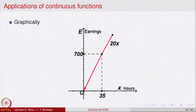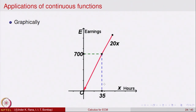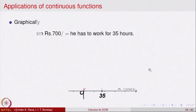To earn 700 rupees by working at 20 rupees per hour, he has to work for 35 hours. Why should he work at all? He has to put in 35 hours of work to earn what he already gets for free. So most likely he will not work at all. This model of the government is not a good scenario, as it discourages employment.